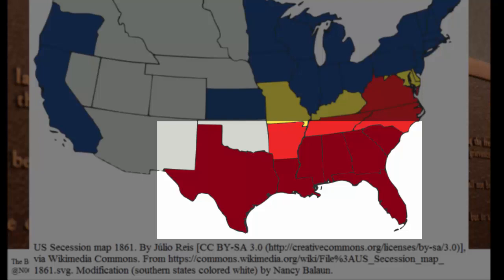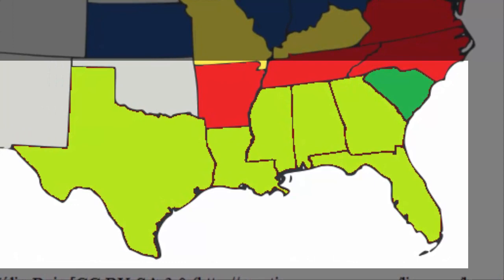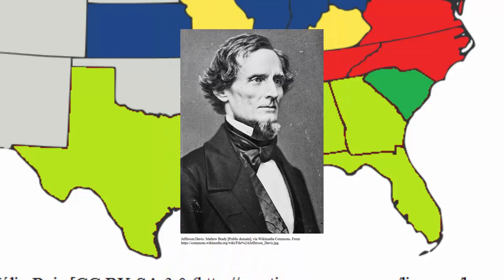And that is exactly what they did upon Lincoln's election as president. South Carolina was the first to sever all ties with the United States of America, and six other southern states quickly followed. Representatives from these states met in Montgomery, Alabama to form a new nation called the Confederate States of America, and a new government with a new president — President Jefferson Davis.